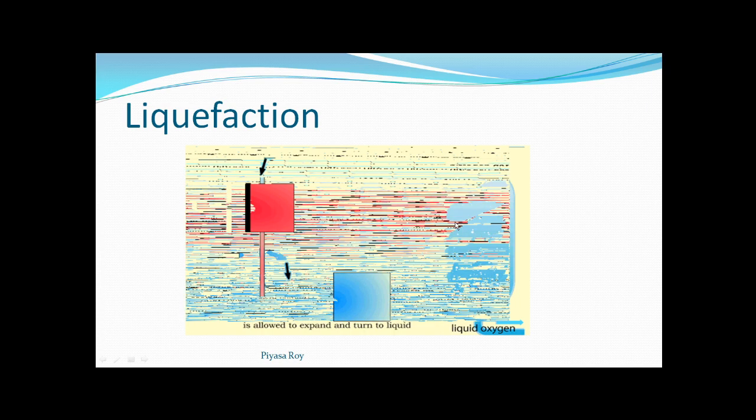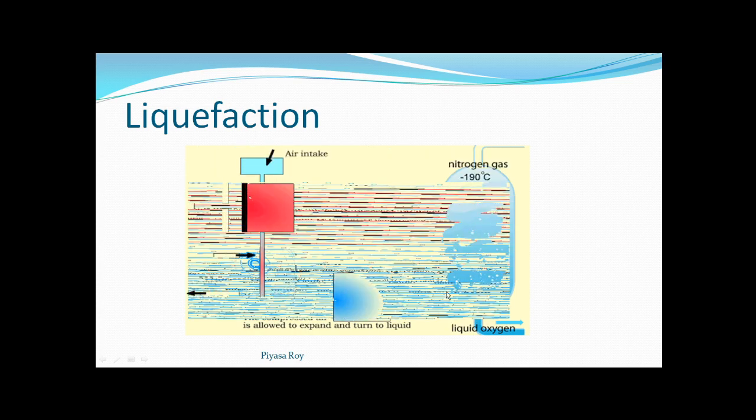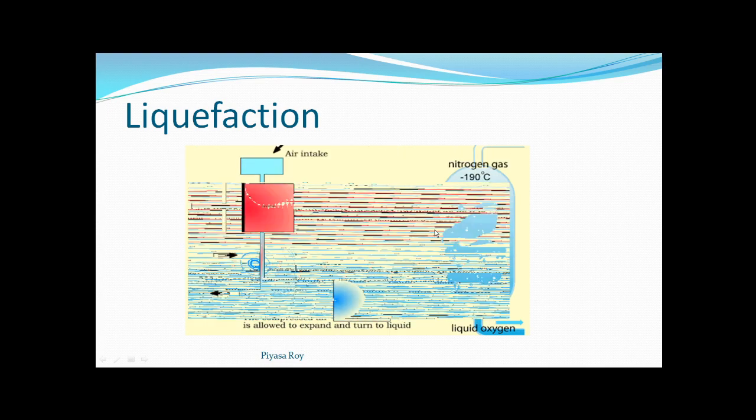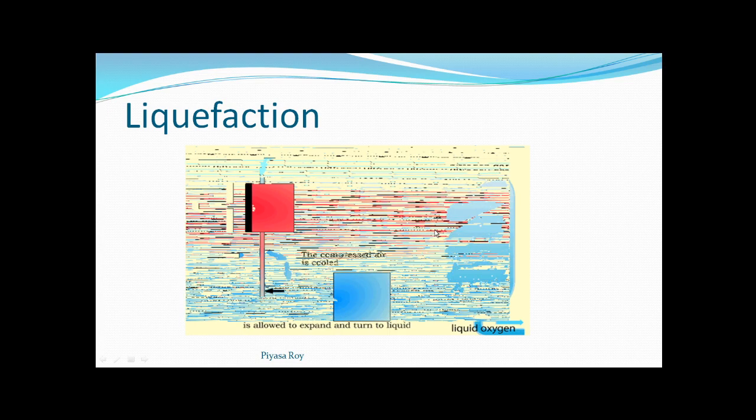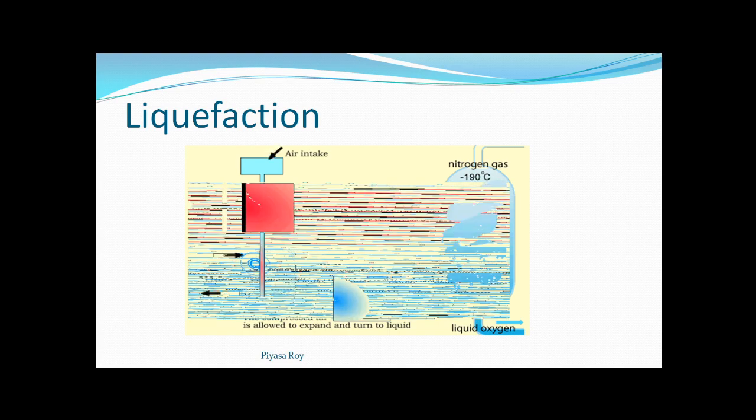In the case of nitrogen and oxygen, nitrogen will be liquefied under the applied conditions, whereas oxygen will remain in gaseous form. So in this manner, we can separate these two gases.